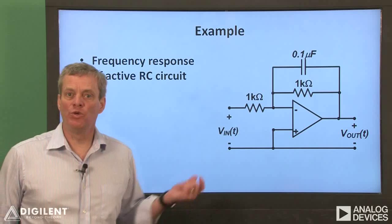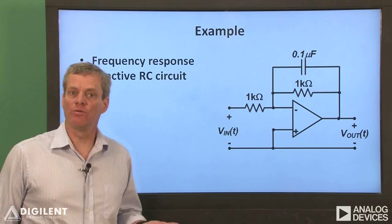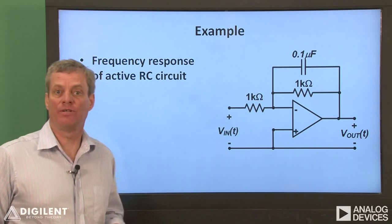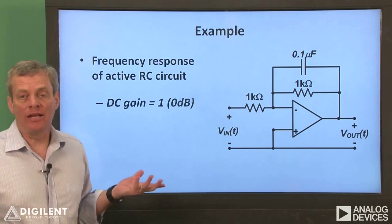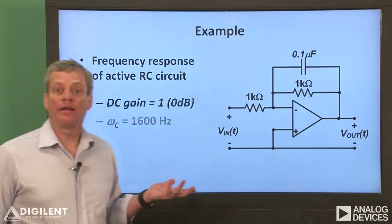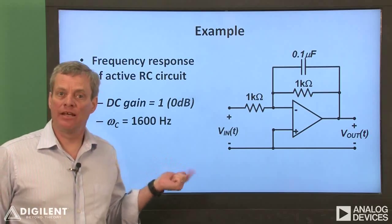Now let's do a quick example of using the network analyzer to measure the frequency response of an active low-pass filter. This is the circuit we'll be using. It should have a DC gain of 0 dB and a cutoff frequency of about 1600 Hz.